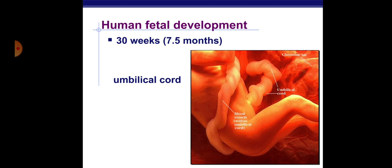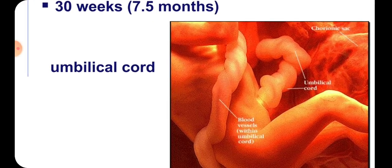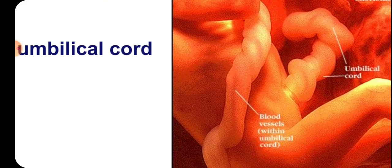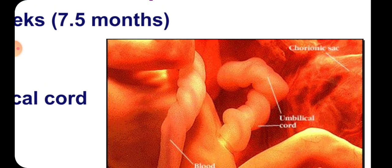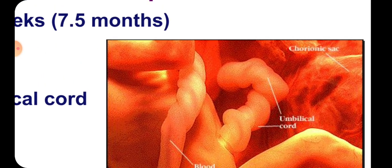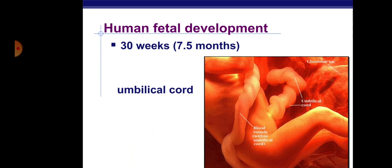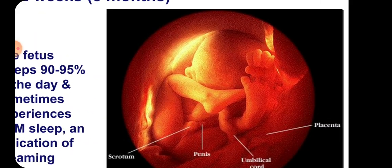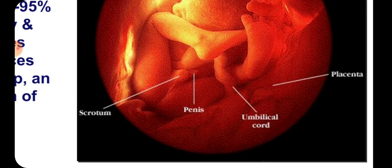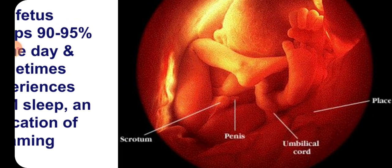This is the human fetal development at 30 weeks, that is seven and a half months. You can see the umbilical cord, blood vessels within the umbilical cord, the chorionic sac, the placenta, and in this image you can also see a penis and scrotum of the developing fetus.